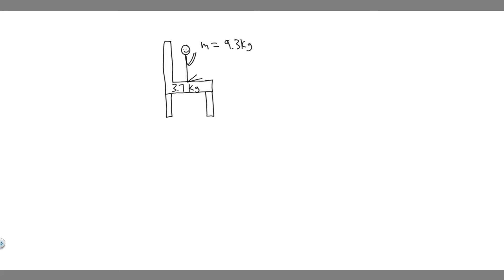In this problem, we're told a 9.3 kg child sits in a 3.7 kg high chair. Part A: draw the free body diagram for the child and find the normal force exerted by the chair on the child. Part B: draw the free body diagram for the chair and find the normal force exerted by the floor on the chair.